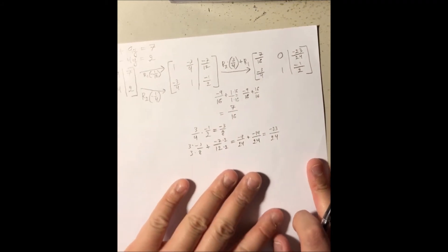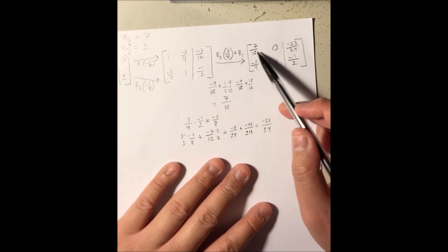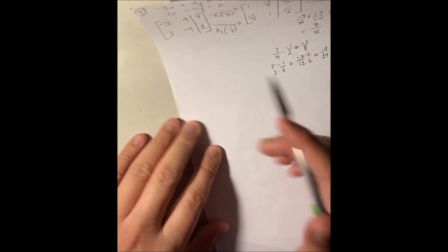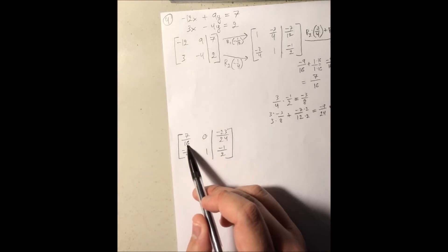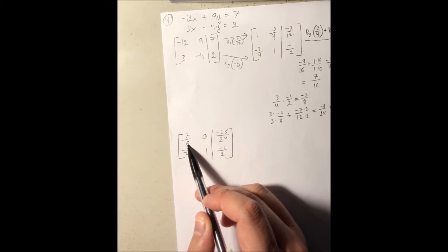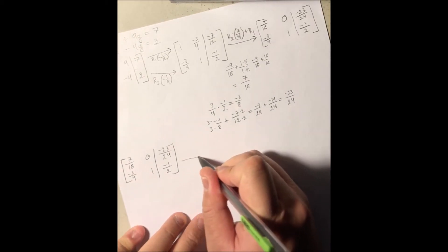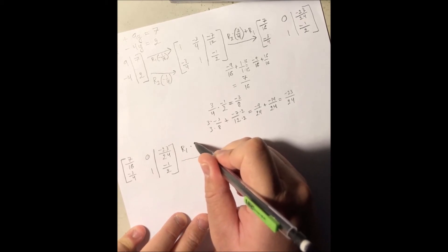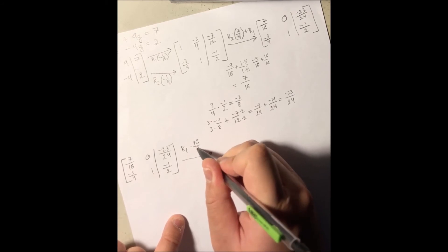So the new matrix has 1, 0, negative 23 over 24 in row 1, and row 2 unchanged. Now I need to convert 7 over 16 back to positive 1, by taking row number 1 and multiplying it by the reciprocal of that fraction, which is 16 over 7.